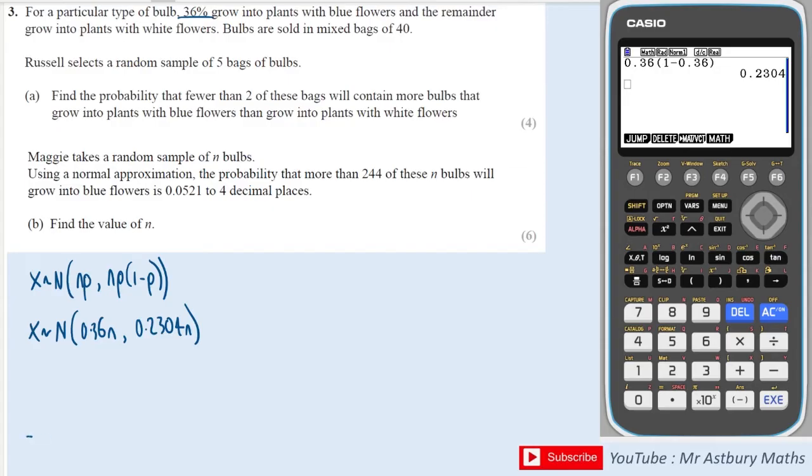Next what I'm going to do is look at this distribution. We have that 244 would be here and I want more than 244, so I want this area here and that is telling me that the probability of that area is 0.0521.